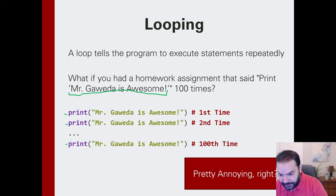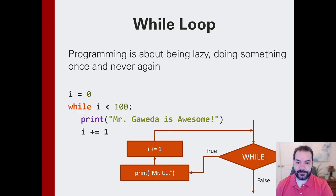Because what happens if I also said you had to add in the number of the lines: 1, Mr. Gaweda is awesome, 2, Mr. Gaweda is awesome, 100, Mr. Gaweda is awesome. Again, that entire process would become taxing and unnecessary, and as I make changes, you have to modify all 100 lines of code. So, as you can sort of imagine, kind of annoying, right? So we could use the idea of a loop to sort of shorten this.